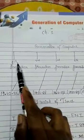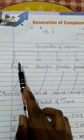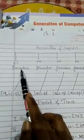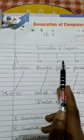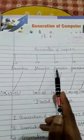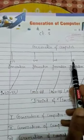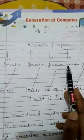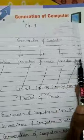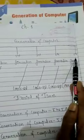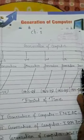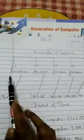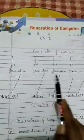They are: 1st generation of computers, 2nd generation of computers, 3rd generation of computers, 4th generation of computers, and the last one is the 5th generation of computers. For each generation, a fixed time period is defined.